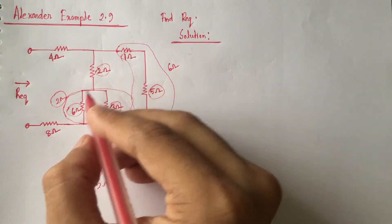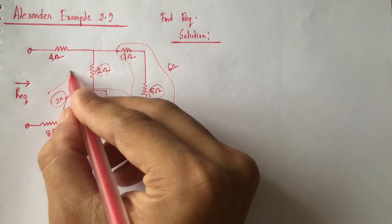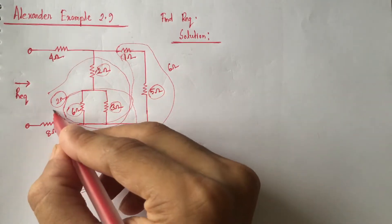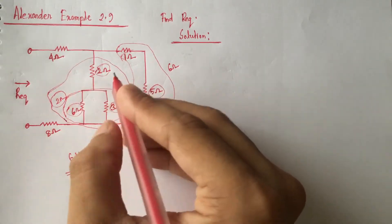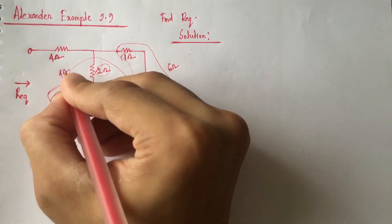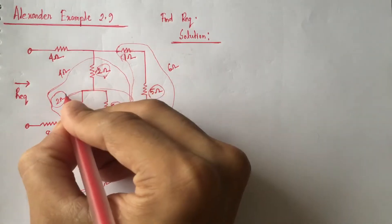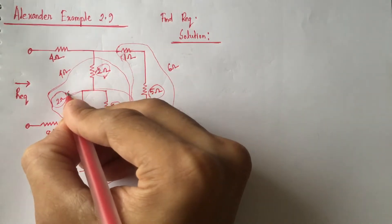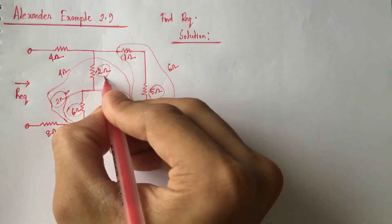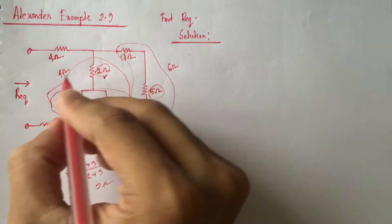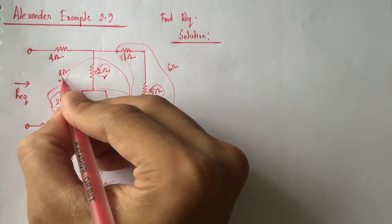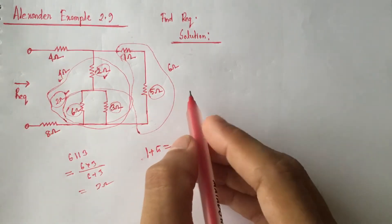Now this 2 ohm resistance and this other 2 ohm resistance are in series, so the equivalent resistance of this part will be 4 ohm. Since these are in series, 2 ohm and 2 ohm are added directly and replaced by a 4 ohm resistance.